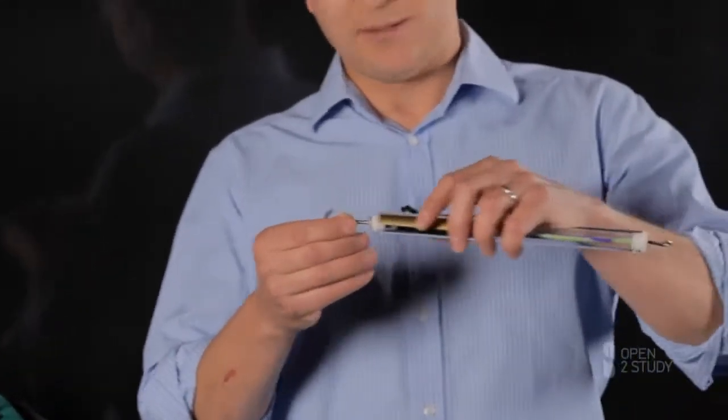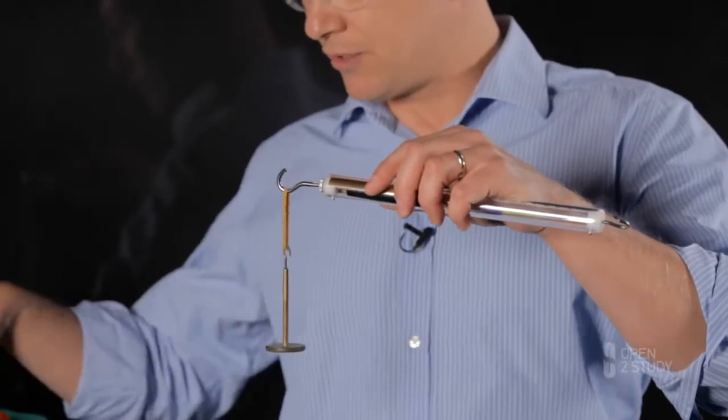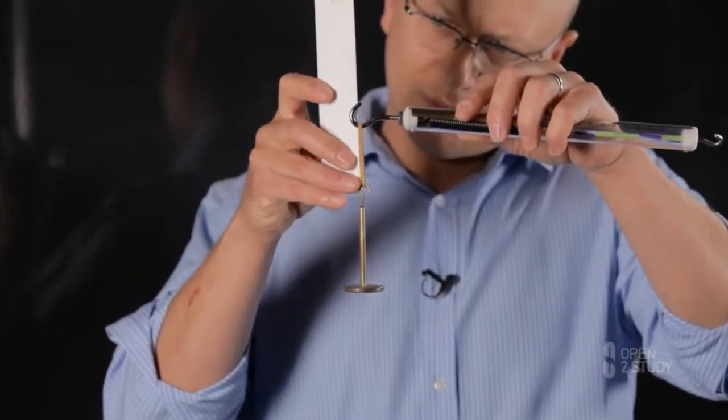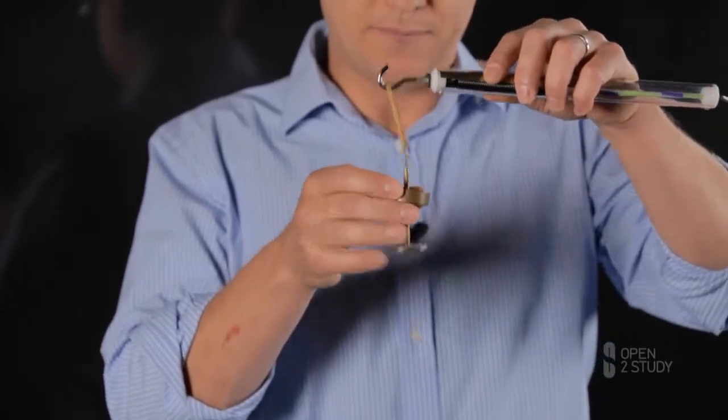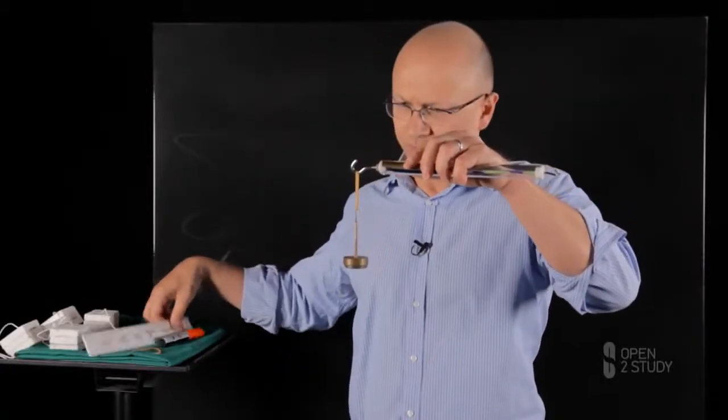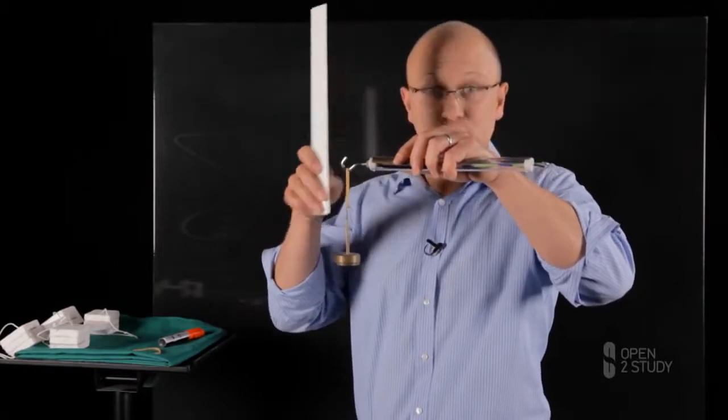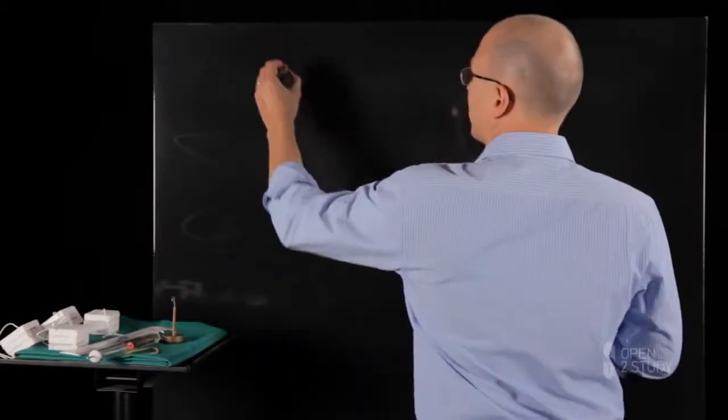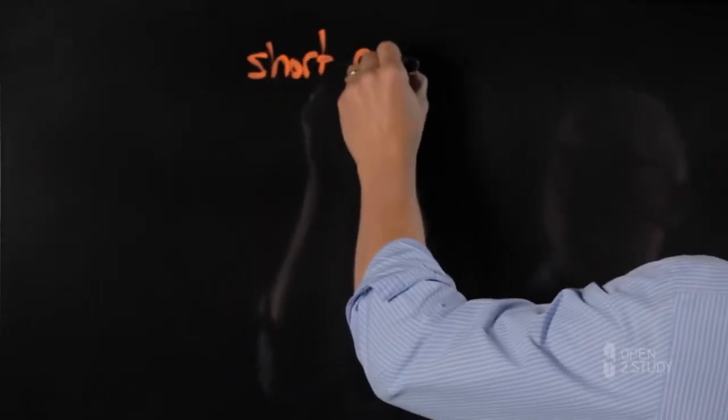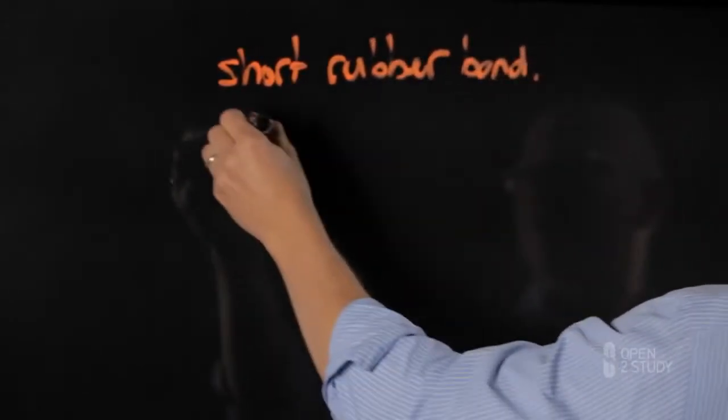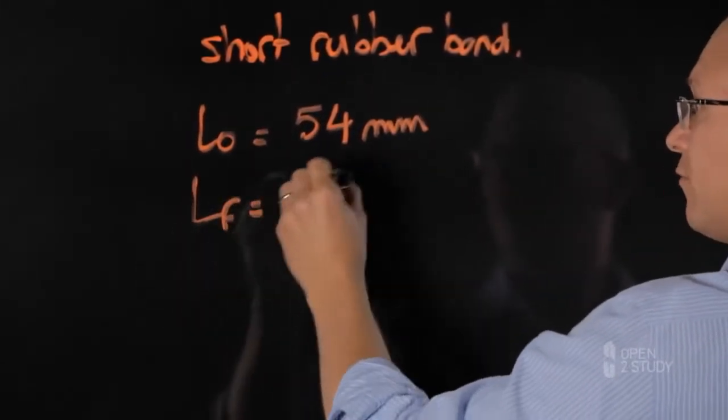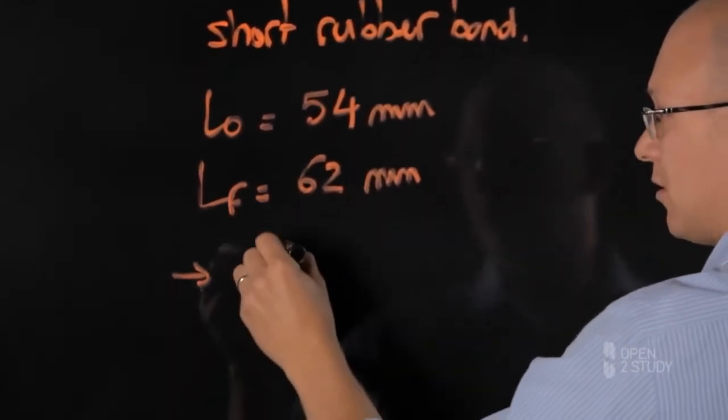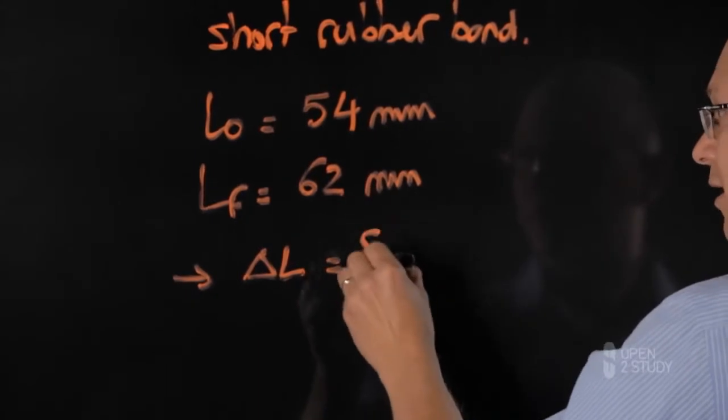Let's see why with an experiment. We take a short rubber band and we're going to place this rubber band in tension. We start by measuring its initial length, which comes to 54 mm. And we place a weight on this hanger to stretch the rubber band. It now stretches to 62 mm. Let's write these results on the board. So we have a short rubber band. We have an initial length of 54 mm, a final length of 62 mm. That gives us an elongation that I will call delta L of 8 mm.